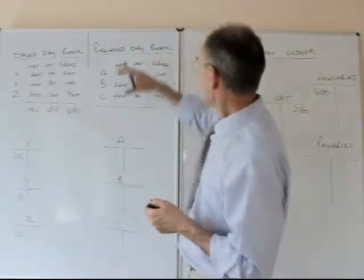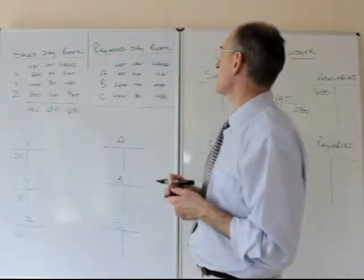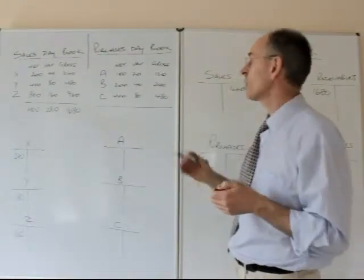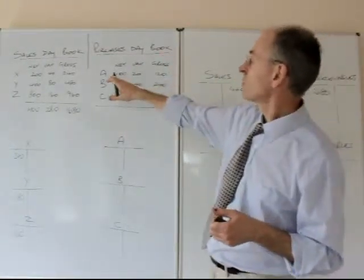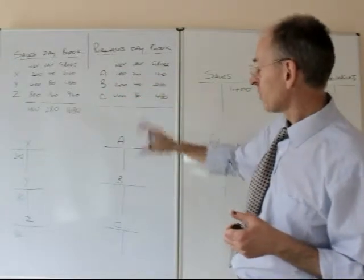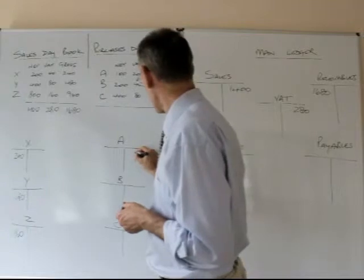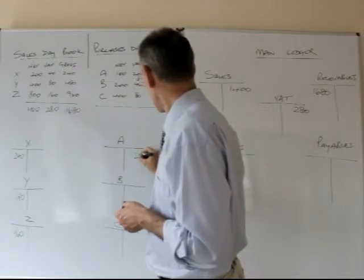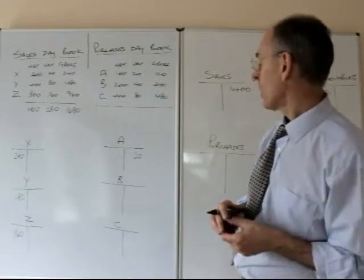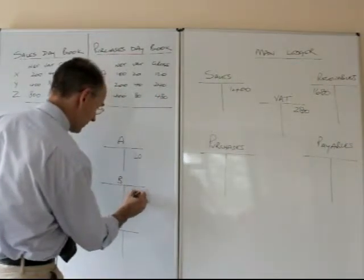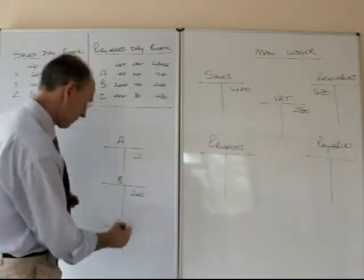So the purchase day book then. We've got the purchase day book details, and we can do pretty much the same as we did with the sales day book. We receive an invoice from supplier A, we update supplier A's account with the gross amount, £120, we update B's with £240, and we update C's with £480.